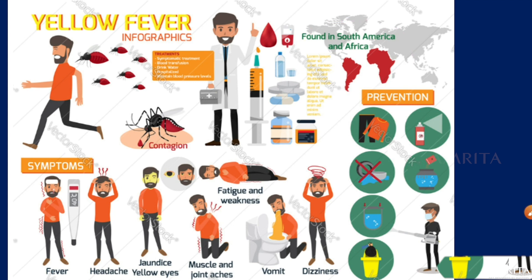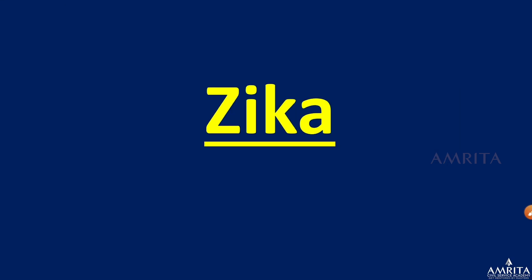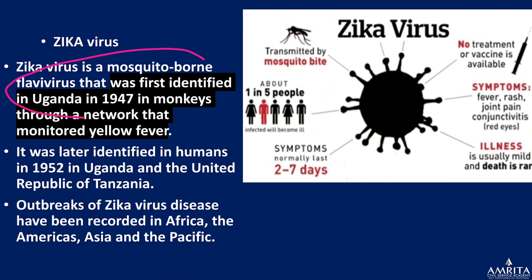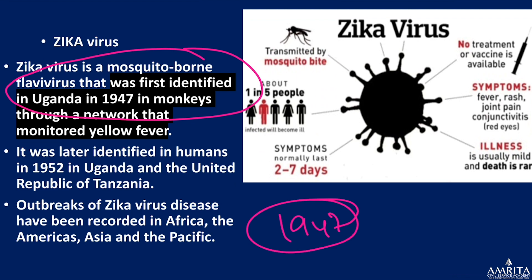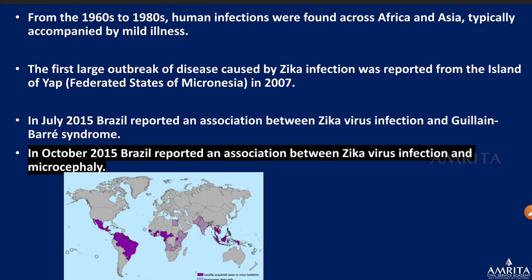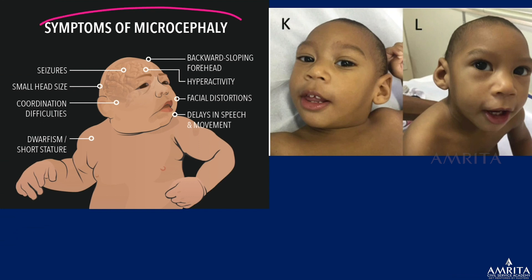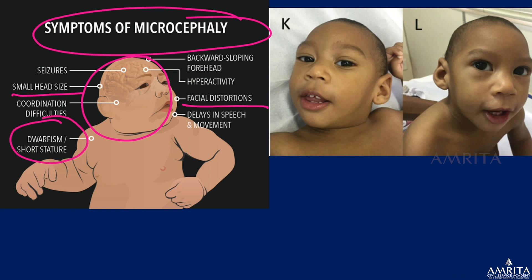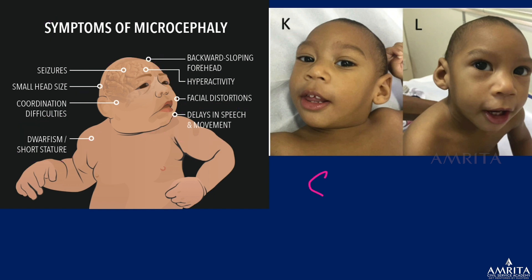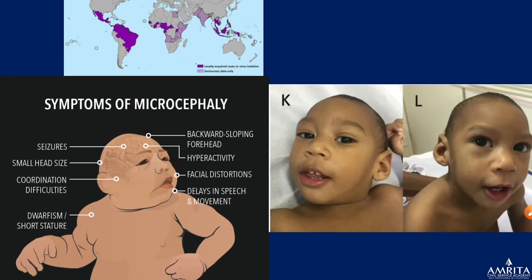Zika is a mosquito-borne flavivirus first identified in Uganda in 1947 and later found in humans. There are two important symptoms to remember. First is microcephaly — a condition seen in children born to infected mothers, characterized by a very small head size, facial distortions, dwarfism, and delayed speech and movement. This shows Zika is also a sexually transmitted disease, passed from mother to child.